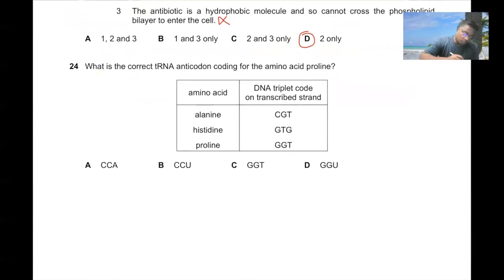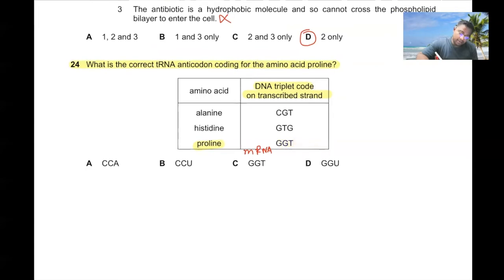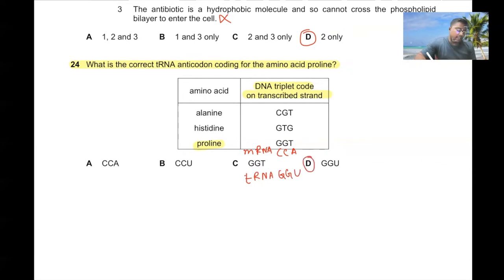Question number twenty-four. What is the correct tRNA anticodon coding for the amino acid proline? The DNA triplet code on the described strand is GGT, so mRNA codon will be CCU or CCA, and the tRNA anticodon will be GGU. D is the correct answer.